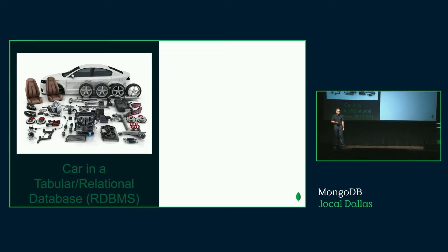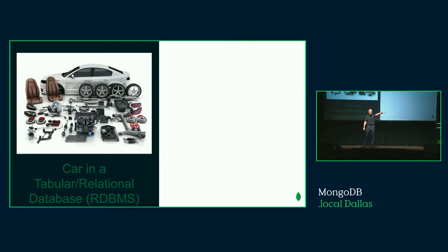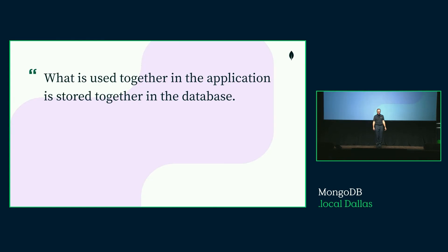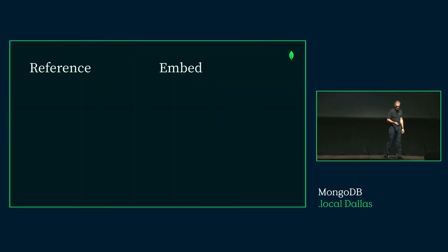I like the analogy of a relational database to a car. I have a car, I bring it home, and I want to put it in the garage. In a relational database, you would take the car, put all the wheels on one table, all the seats on another, the brakes on another. If you were using a MongoDB garage, you would just park the car in. In MongoDB, what is used together in the application is stored together in the database, making it so much easier.